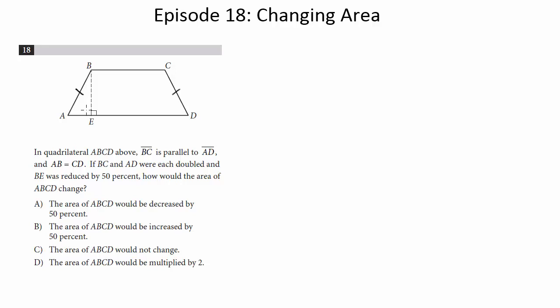For these kinds of questions, where you're changing the dimensions and you want to know if the area changes as a result, two ways you can handle it. One is you can do it abstractly, so you could look at the formula and say, what would happen if I double this and reduce this by 50%, what would be the effect on the overall area?